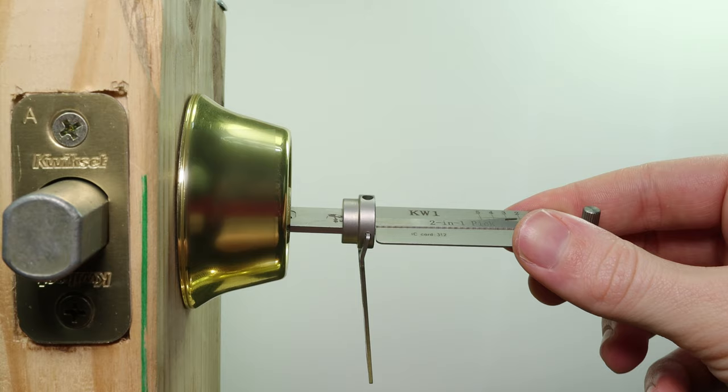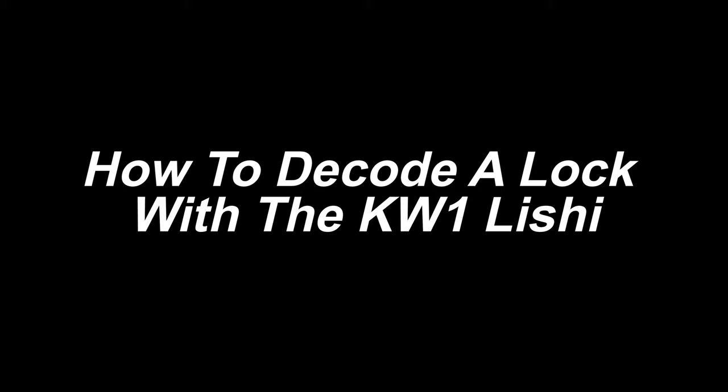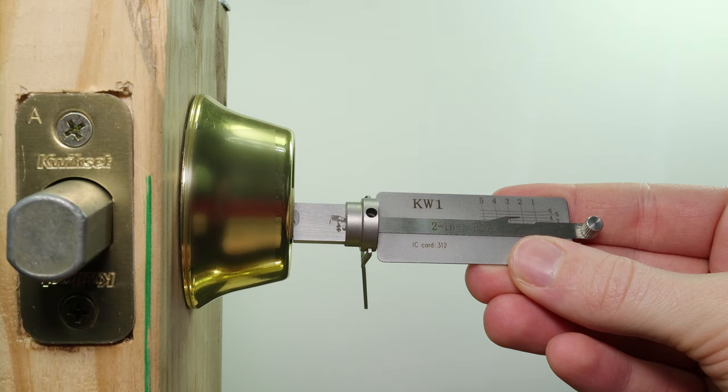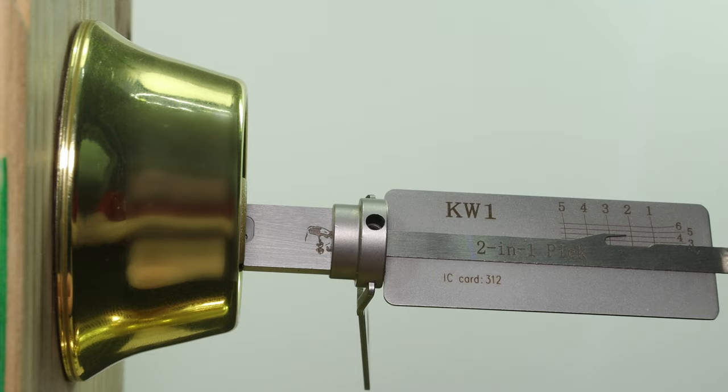So now that we have the lock opened up, the next thing we're going to want to do is start the decoding process. One of the most important things you need to do is make sure, one, you do not re-lock the lock, and two, make sure the tool is fully inserted. If it's not fully inserted, you're not going to be able to do it correctly. So what I'm going to do is we're going to focus on the tool right now, and then we're going to start to decode this lock so we can see exactly what's going on.